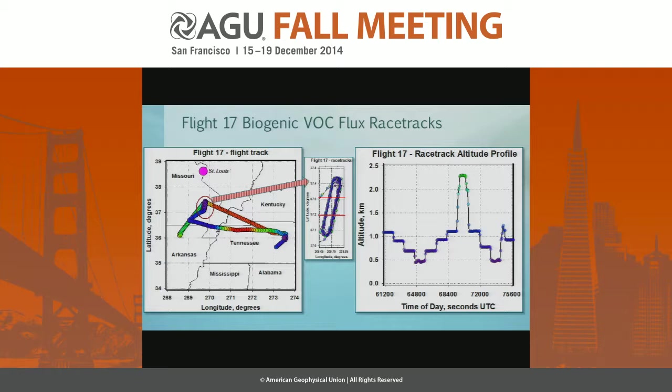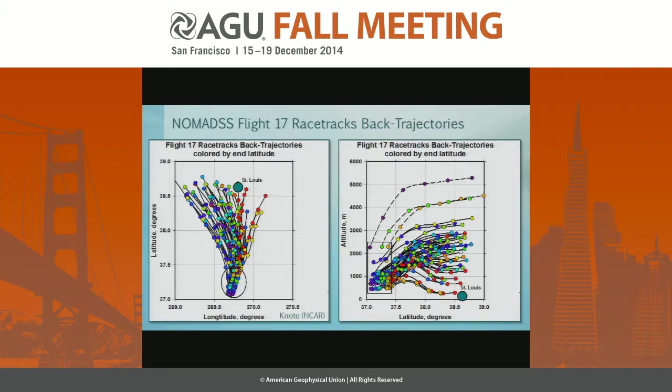Now let's look at one example: Flight 17 from NOMADS, going to southeast Missouri, straight south of St. Louis, with prevailing winds generally from the north. We're doing racetracks at various altitudes — the points are colored by altitude. All of these legs are in the boundary layer, and we did one leg at high altitude above the boundary layer as a sanity check.